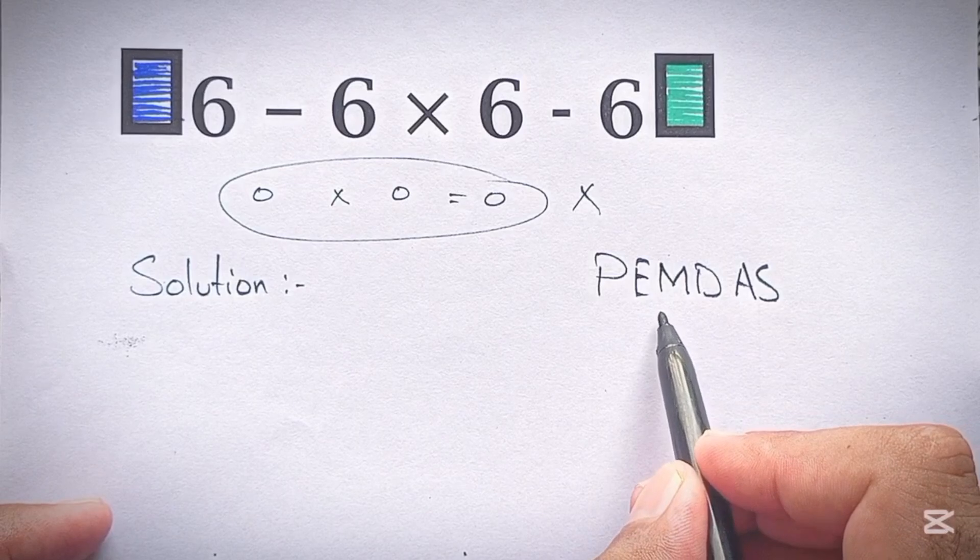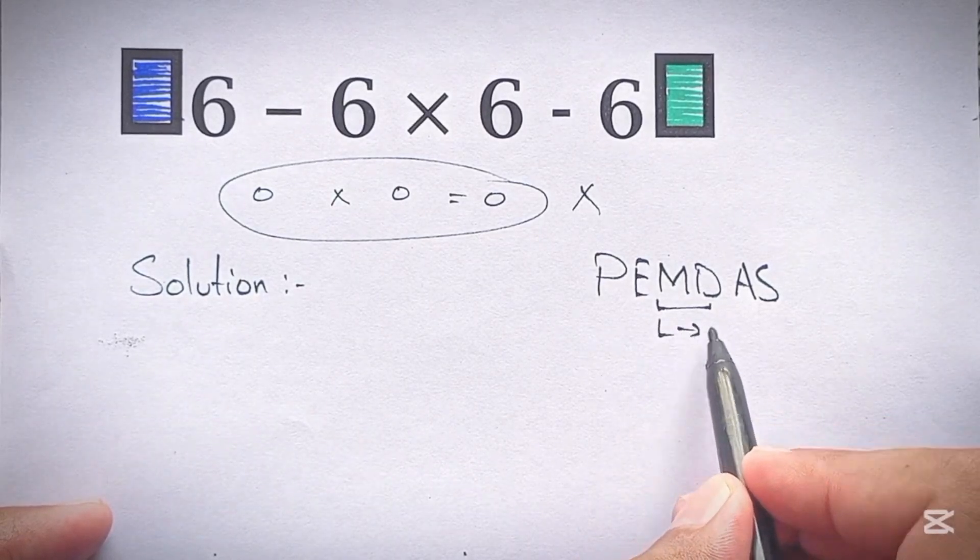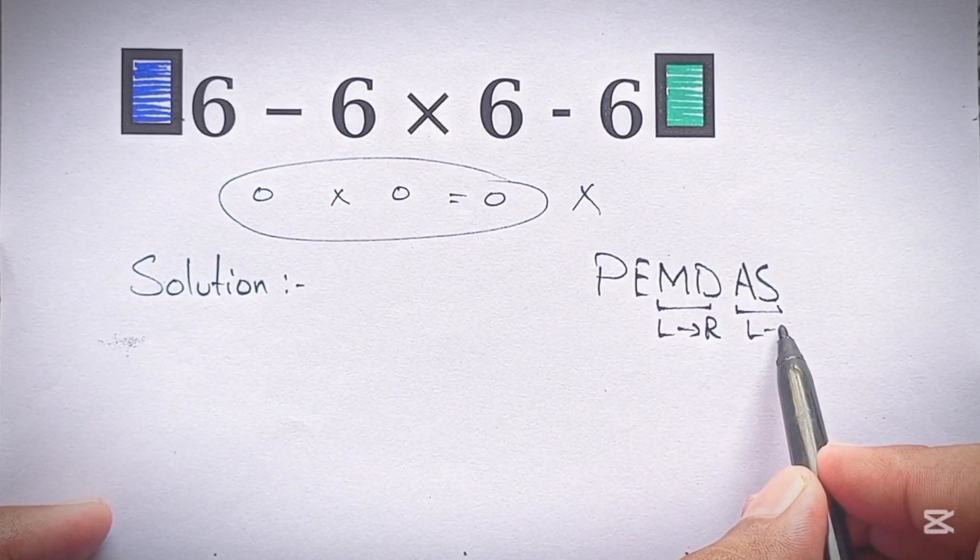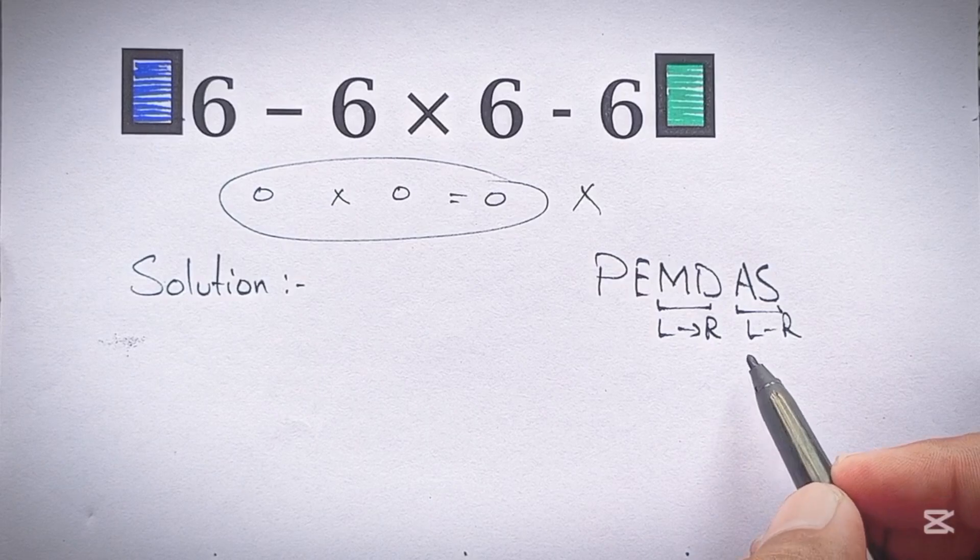Remember that multiplication and division have equal priority and we work from left to right. And the same applies to addition and subtraction.